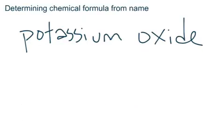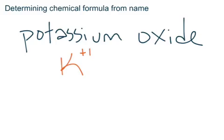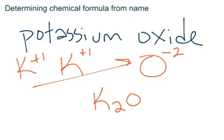If you're given the name and asked to come up with the chemical formula, we do the same process. Based on the name, you can find the element symbol and oxidation number by looking at the periodic table. For example, for potassium oxide: potassium is in group 1, which always has a plus 1 charge, and oxygen is in group 6, which always has a minus 2. So the formula for potassium oxide is K₂O, because we need 2 Ks to balance out the 1 O.